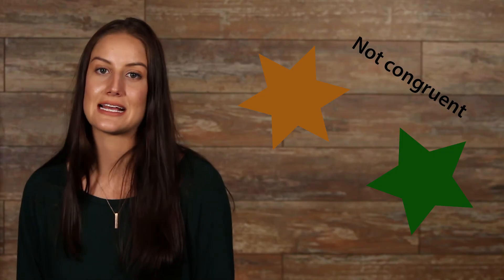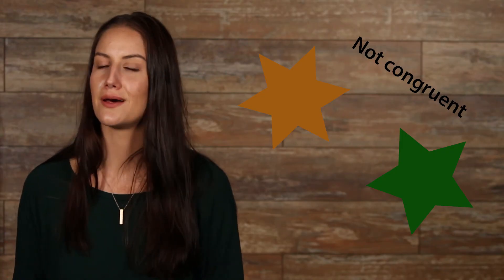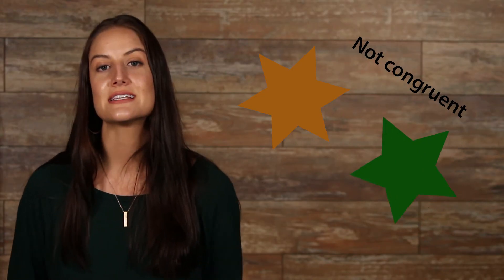Are these two shapes congruent? No, they are not congruent. We can see that they are different sizes, and one star has six points while the other one has five. To see this more clearly, we can place them on top of one another.